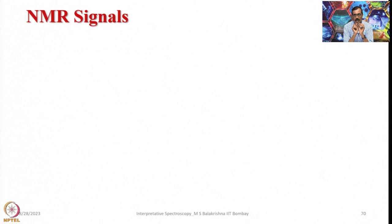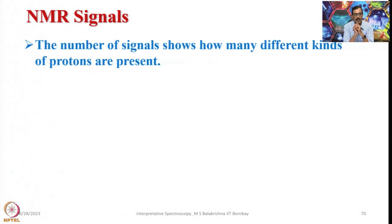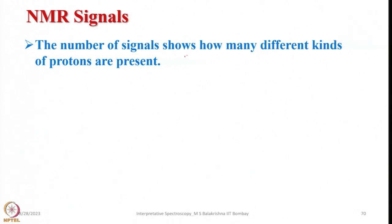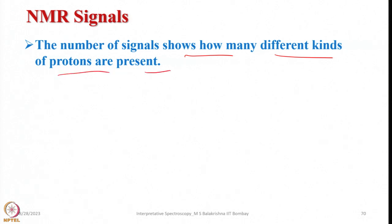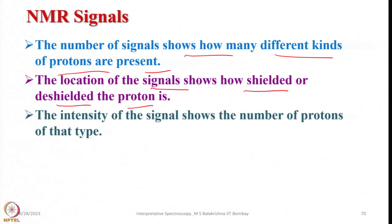Let us go back to those few points. In an NMR spectrum we get NMR signals. What do these signals say about the molecule? The number of signals shows how many different kinds of protons are present, the location of the signals shows how shielded or deshielded — this is very important information — and the intensity of the signals shows the number of protons of that type.